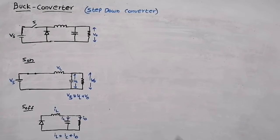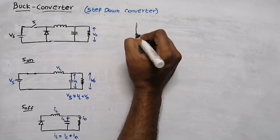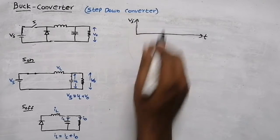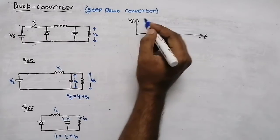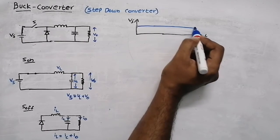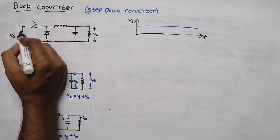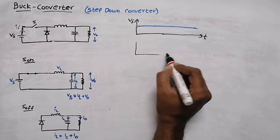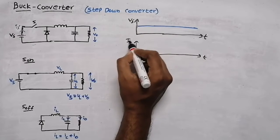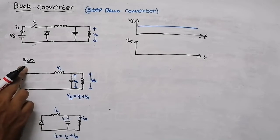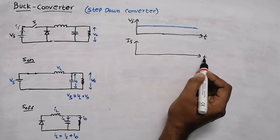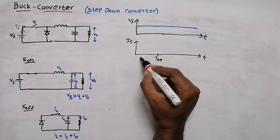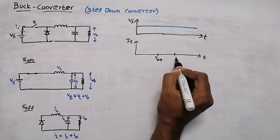Now we can draw the waveforms. First, the source voltage is a DC voltage — a constant horizontal line. The source current waveform is drawn with respect to the time axis. There are two modes of operation: switch on (T_on) and switch off (T_off), and T_on plus T_off equals total period T.